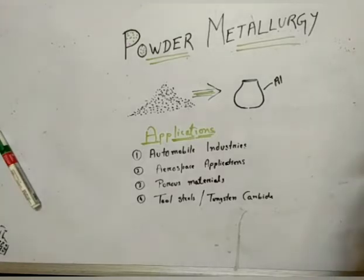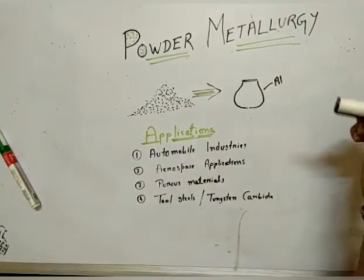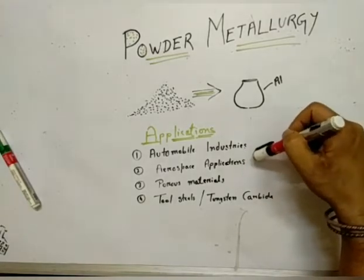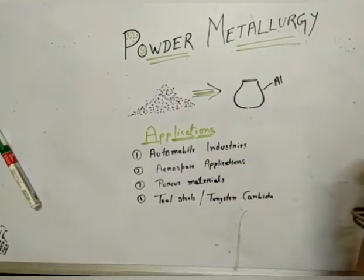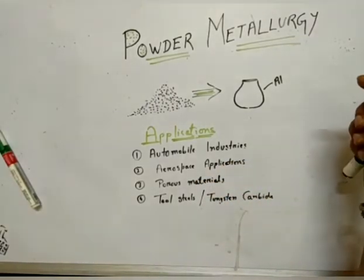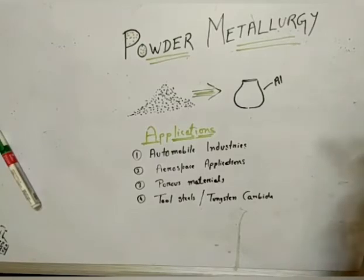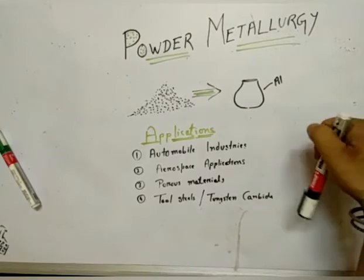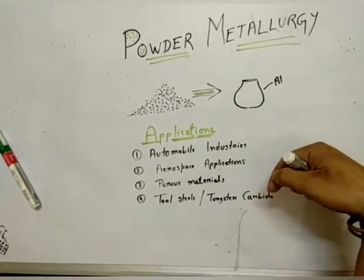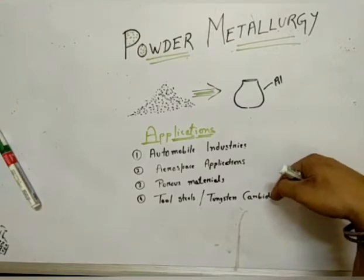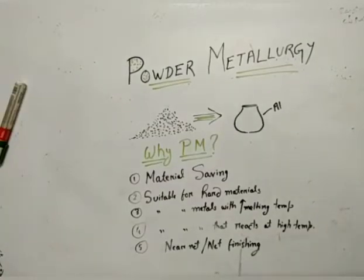Powder metallurgy parts are used in automobile industries to create gears, connecting rods, piston rings, and so on. In aerospace, these parts are also widely used. One of the most unique application areas is creating porous materials or metallic foam — for example, aluminum metal foams used in heat exchangers. Then tool steels and tungsten carbide, which are very hard tools difficult to produce by other manufacturing processes, are also made using powder metallurgy, including hard dies and punches.